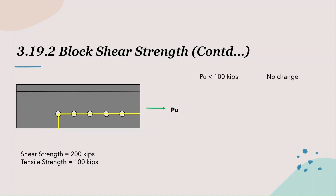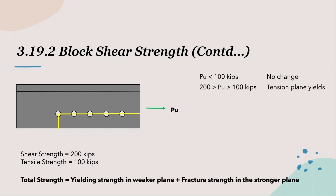There will be no change in the section if the tensile force is kept below 100 kips. But if the tension force increases beyond 100 kips but below 200 kips, the tension plane starts to yield because the force has exceeded the tensile strength of the plane. However, the member does not fail yet, as the tensile plane is connected with the shear plane which has a much higher strength. The shear plane will keep the section intact but will allow the steel to yield in tension. The steel is kept intact because of the yielding strength in tension and the fracture strength from the shear plane. So the total strength of the connection is the combination of the yielding strength in the weaker plane and the fracture strength in the stronger plane.